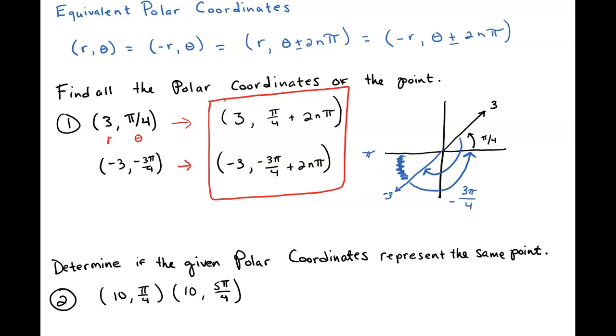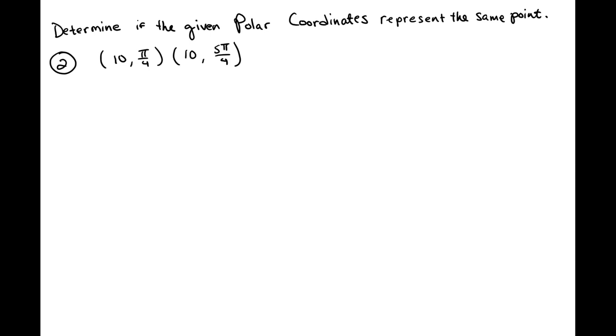Now we're going to look at one final example here. It says determine if the given polar coordinates represent the same point. Okay, this one's not terribly bad. All that you know is that your r is the same, so this checks off here. Now we investigate our θs, so θ should be a difference of 2π.